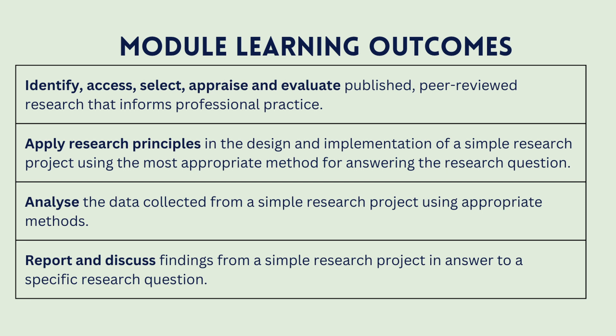The learning activities include working in class to do a systematic search together so students can identify and access papers, then selecting the ones that are relevant. There's a learning activity around appraising those papers — what's the quality, are they good or not? Then students evaluate them through a formative task: an annotated bibliography where they talk through what they found, what was good or poor, and what they can use for their assessment. For the second learning outcome, they design and implement a simple research study — designing a survey tool or an interview guide for qualitative data, then actually collecting data.